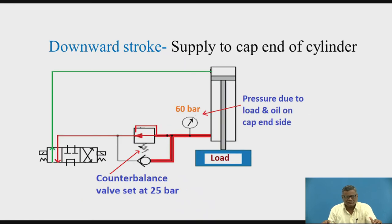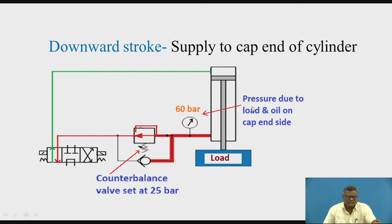Now we are shifting the spool. When the spool is shifted to this position, P is now connected to A. So the pressurized oil goes to the cap end of the cylinder, and the force will be exerted on the piston. Now the total pressure has contributions from two components: one is the pressure due to the load, piston rod, and piston; the other is the pressurized oil received from the pump on the cap end side. This pressure plus the pressure due to the load together increases, and the value obtained is equal to 60 bar — which is larger than the setting of the counterbalance valve at 25 bar.